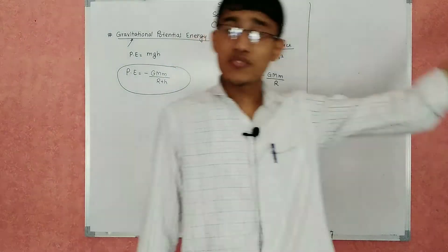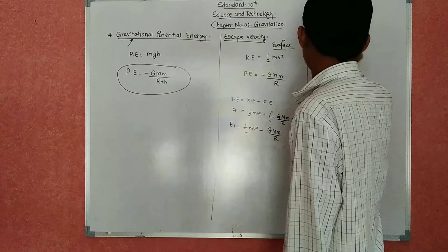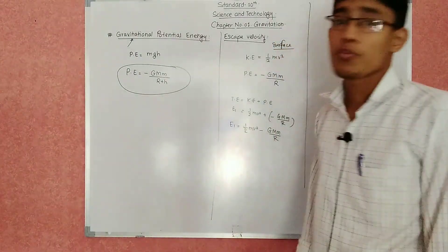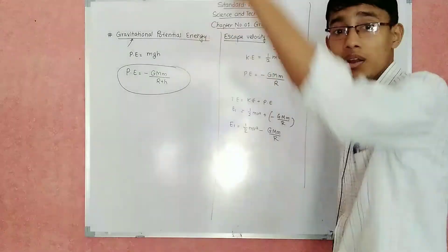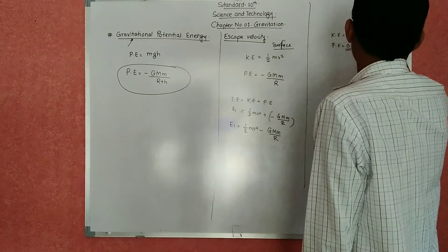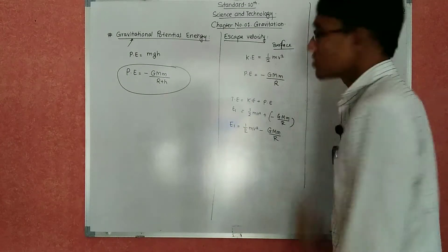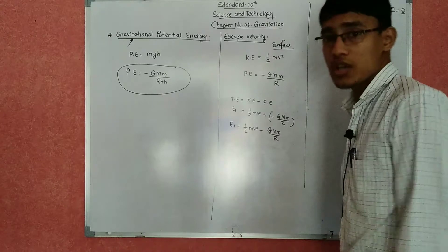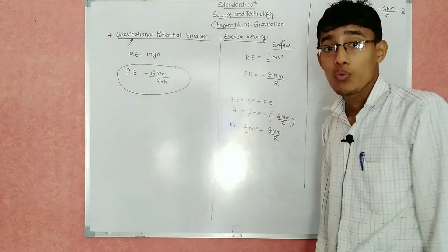Now consider the object reaching an infinite distance. At infinite distance, kinetic energy is going to be zero and potential energy is also going to be zero. Potential energy = −GMm/∞ = 0, since dividing any number by infinity gives zero. So both KE and PE are zero, meaning total energy E₂ = 0.